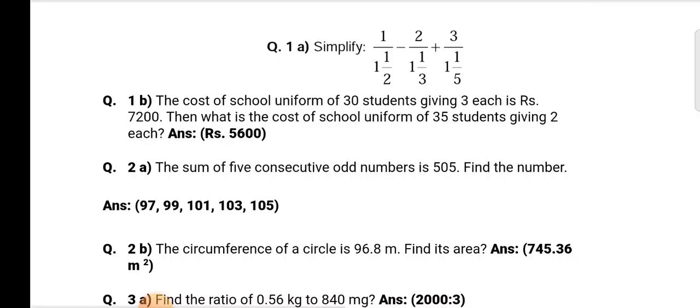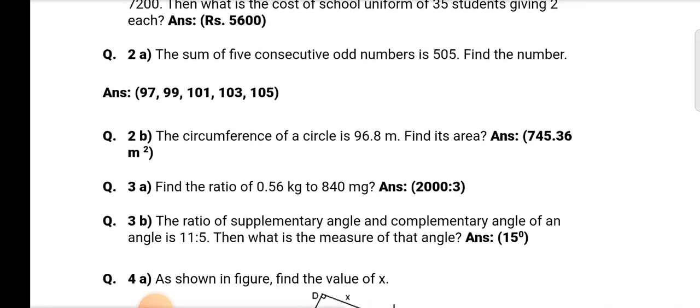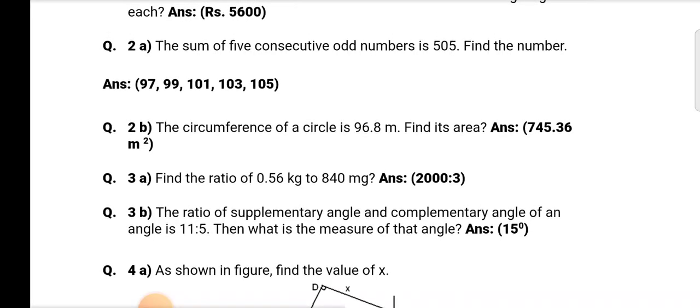Question number 2a: The sum of five consecutive odd numbers is 505. Find the numbers. Answer: 97, 99, 101, 103, and 105. These are the five numbers.